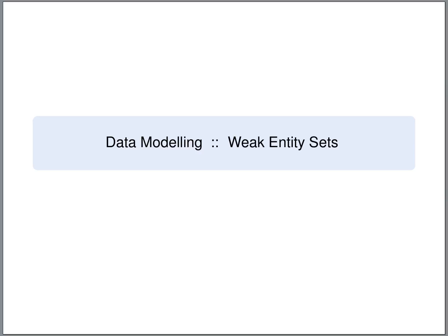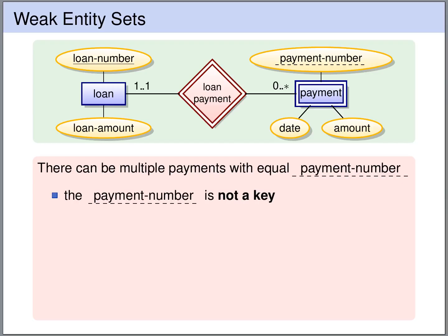An important concept in Entity Relationship models are weak entity sets. In this example, the payment is a weak entity set. It is visualized similar to entity sets using a rectangle, but now we use a double line. So what makes payment a weak entity set? The crucial feature is that the payment does not have a key attribute attached to it.